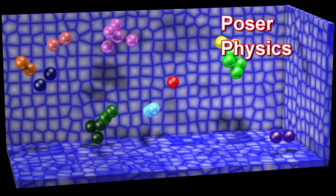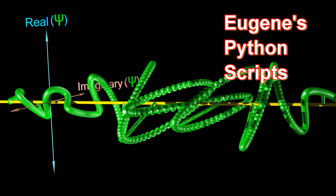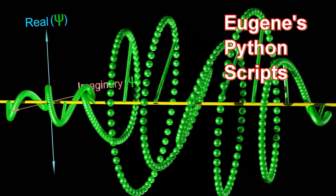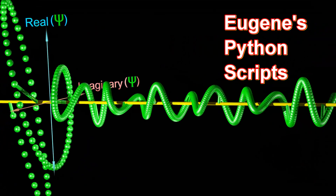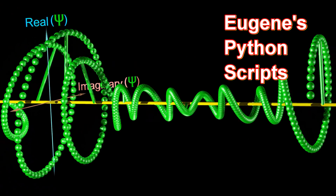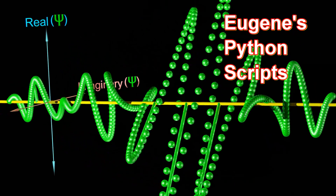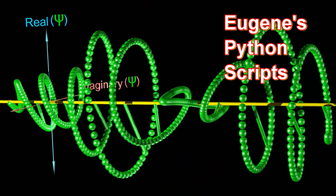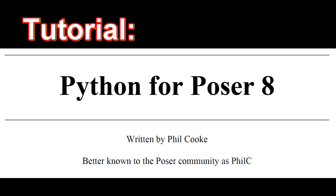Other simulations on this channel were created through algorithms that Eugene wrote himself using the programming language Python. Poser and other animation programs are able to read Python scripts, which tell the program how to animate the objects. If you want to write Python scripts for Poser, you may want to check out a very good online tutorial titled Python for Poser, written by Phil C.